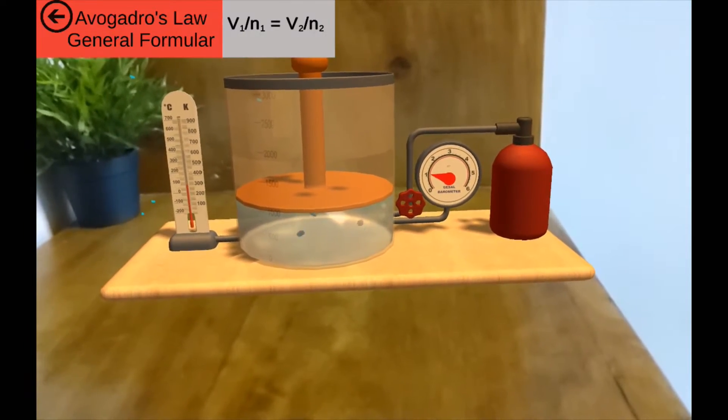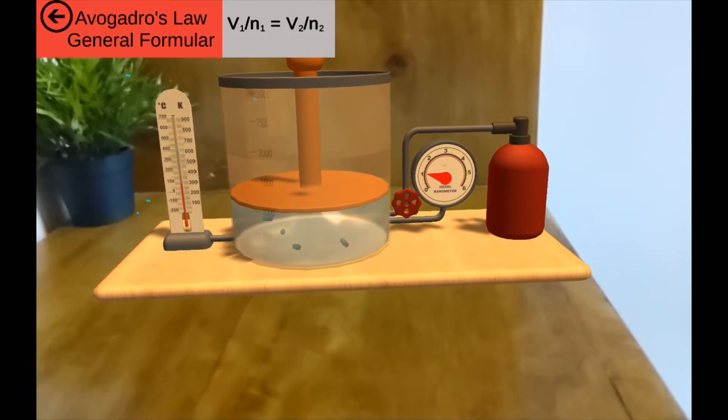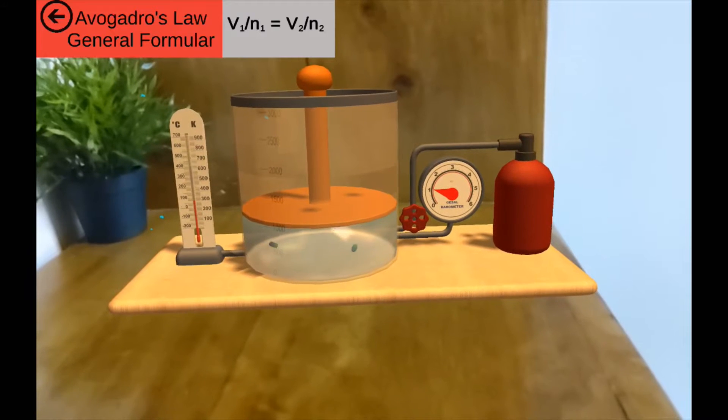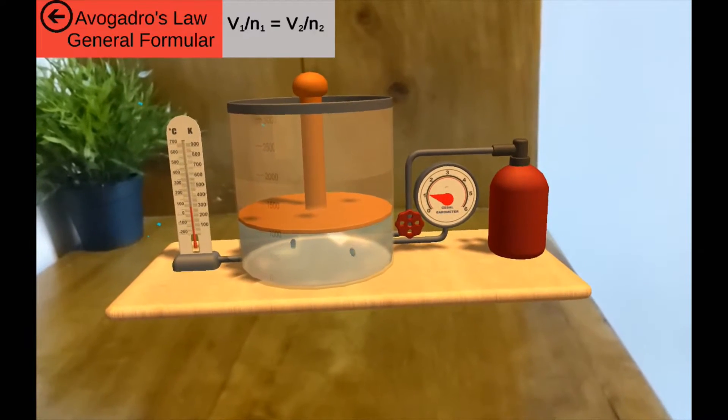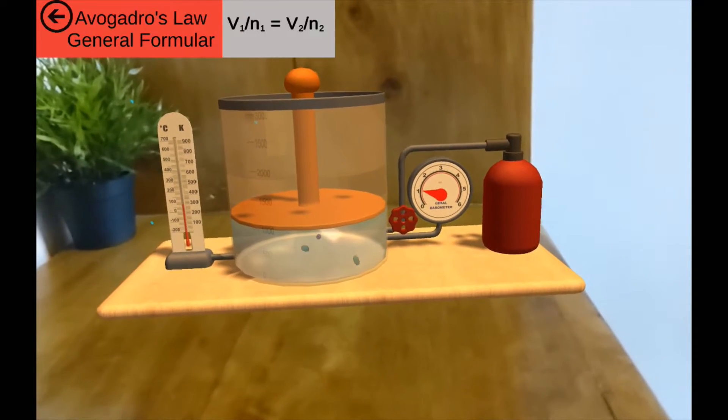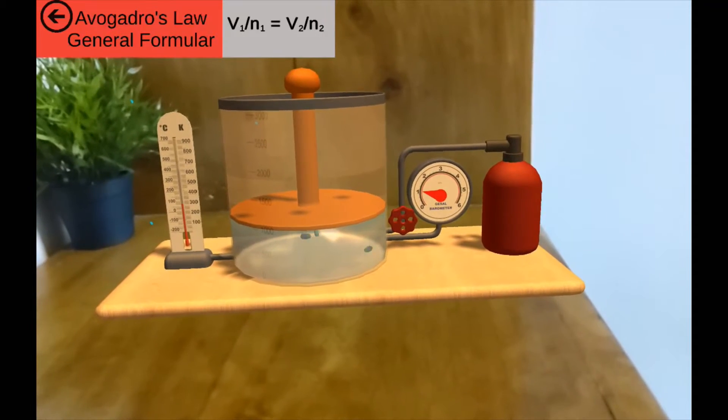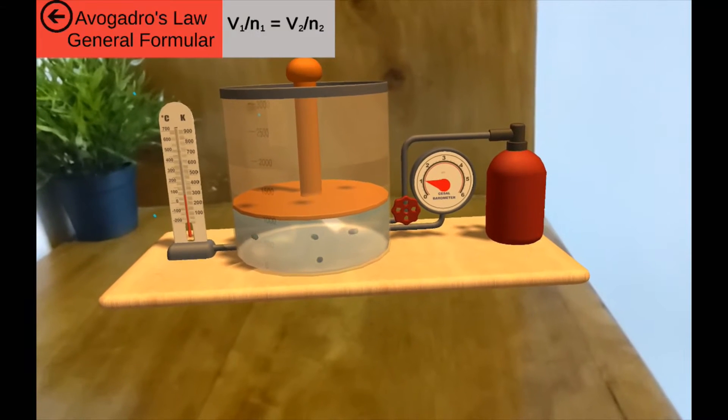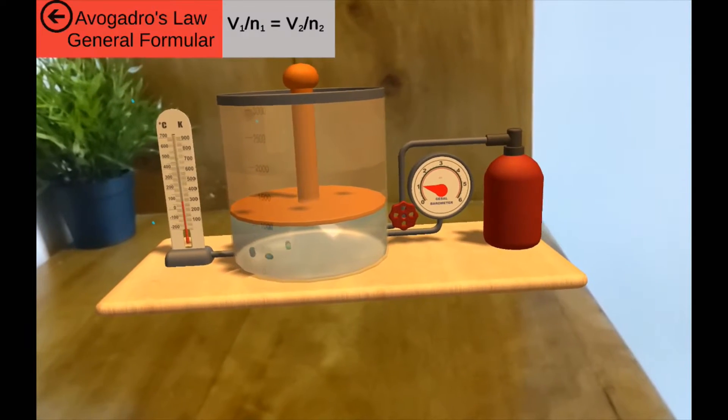So let's state Avogadro's law before we proceed. Avogadro's law states that at constant pressure and temperature, the volume of a gas is directly proportional to the number of moles of that gas. You can call the number of moles amount. Now we know what Avogadro's law entails.